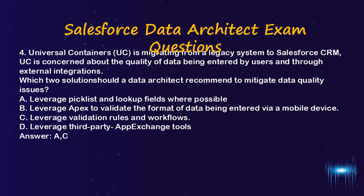Question 4. Universal Containers (UC) is migrating from a legacy system to Salesforce CRM. UC is concerned about the quality of data being entered by users and through external integrations. Which two solutions should a data architect recommend to mitigate data quality issues? A. Leverage picklists and lookup fields where possible. B. Leverage Apex to validate the format of data being entered via a mobile device. C. Leverage validation rules and workflows. D. Leverage third-party AppExchange tools. Answer: A and C.